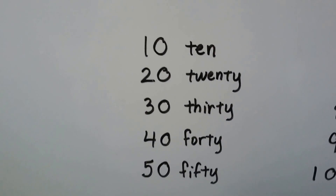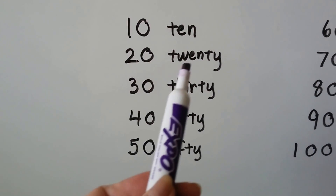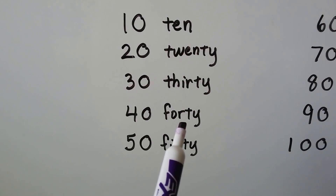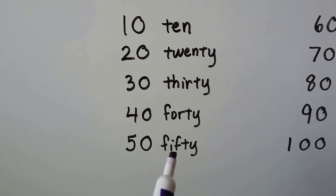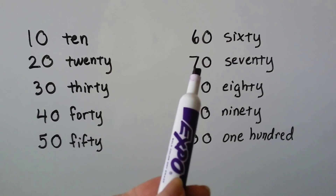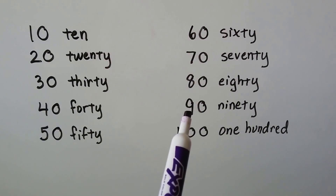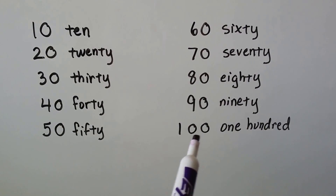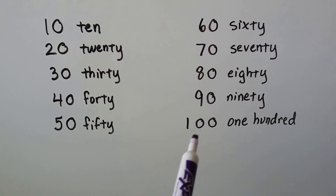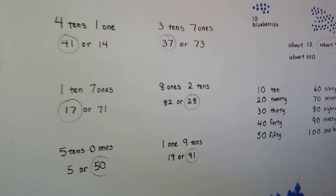When we write our numbers: one ten, zero ones is 10; two tens is 20; three tens is 30; four tens is 40; five tens is 50; six tens is 60; seven tens is 70; eight tens is 80; nine tens is 90. And when we have ten tens, we have 100 — we have a new place value! We have the ones, the tens, and then the hundreds.